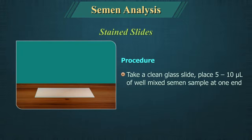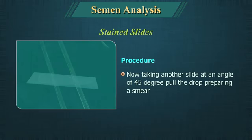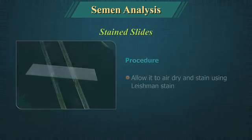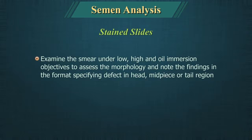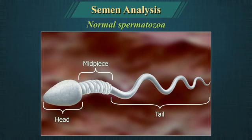Stained slides for morphology: Leishman stained smears are used to study sperm morphology. Take a clean glass slide, place 5–10 microlitres of well-mixed semen sample, then taking another slide at an angle of 45 degrees, pull the drop of semen preparing a smear. Allow it to air dry and stain using Leishman stain. Examine the smear under low power, high power and oil immersion objectives to assess the morphology. Note findings specifying defects in the head, midpiece or tail region. For a spermatozoon to be considered normal, all parts must be normal; all borderline forms should be considered abnormal.